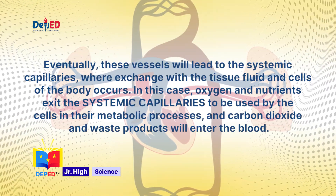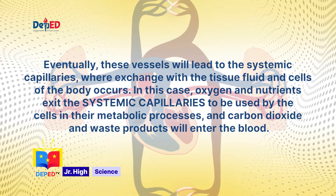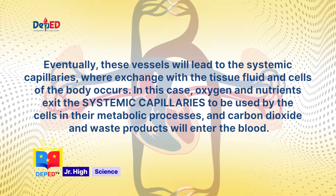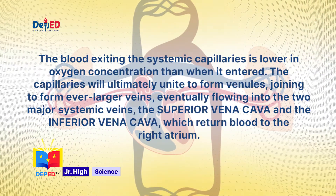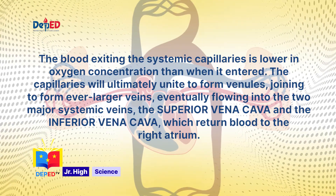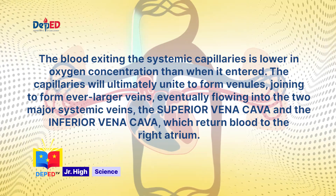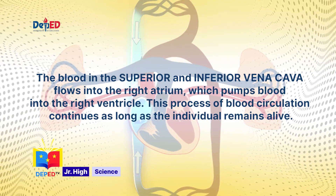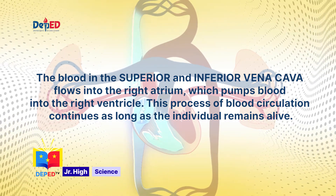Eventually, these vessels lead to the systemic capillaries, where exchange with the tissue fluid and cells of the body occurs. Oxygenated blood and nutrients exit the systemic capillaries to be used by the cells in their metabolic processes, and carbon dioxide and waste products enter the blood. The blood exiting the systemic capillaries is lower in oxygen concentration. The capillaries unite to form venules, joining into ever-larger veins, eventually flowing into the superior vena cava and the inferior vena cava, which return blood to the right atrium. The right atrium pumps blood into the right ventricle, and this process of blood circulation continues as long as the individual remains alive.